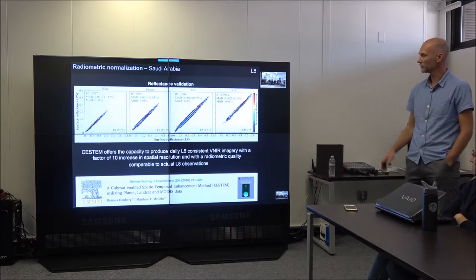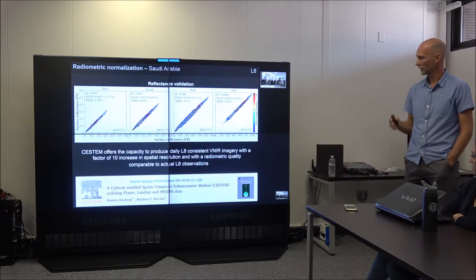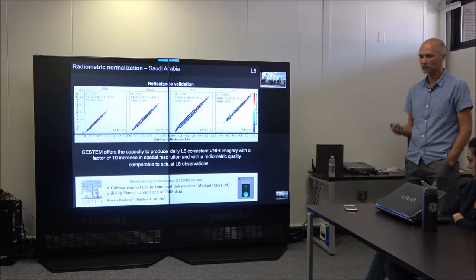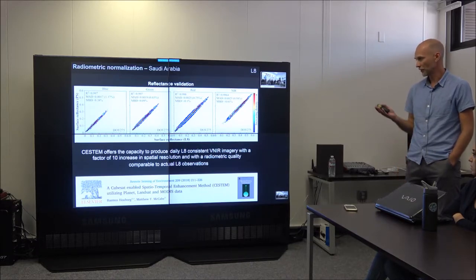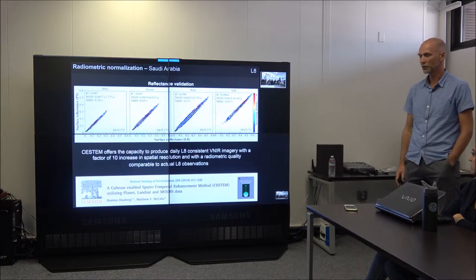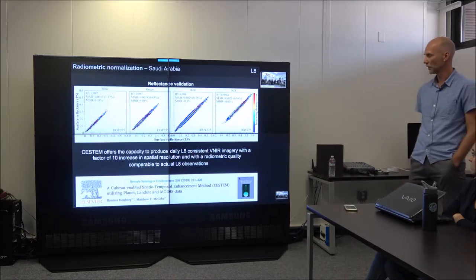And this is an independent validation between the CESTEM corrected surface reflectance estimates and day coincident Landsat estimates, showing an error of around one percent. So it really shows you that using this methodology, you can produce daily Landsat-like consistent imagery from the CubeSat data with a factor of 10 increase in spatial resolution, and then with a radiometric quality that is quite comparable to what you will get with actual Landsat observations.